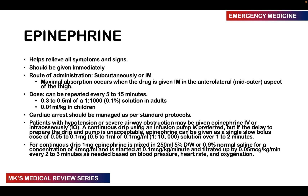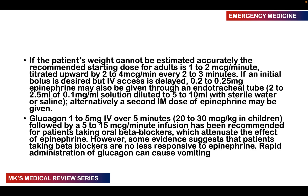For a continuous IV drip, mix 1 milligram of epinephrine in 250 mL of 5% dextrose or normal saline for a concentration of 4 micrograms per mL. Start at 0.1 micrograms per kg per minute and titrate up by 0.05 micrograms per kg per minute every 2 to 3 minutes based on blood pressure, heart rate, and oxygenation. If the patient's weight cannot be determined, the recommended starting dose is 1 to 2 micrograms per minute, titrated upwards by 2 to 4 micrograms per minute every 2 to 3 minutes.